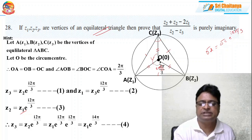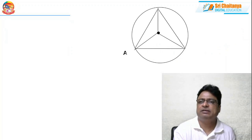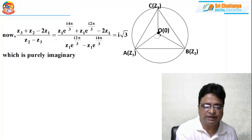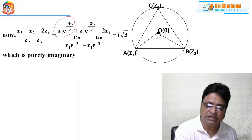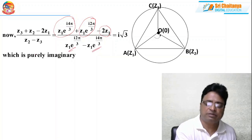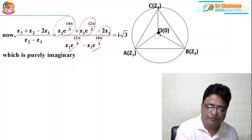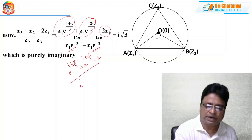You substitute Z3, Z2, and Z1 in the given rational function. In place of Z3 I have written the combination in terms of Z1, and similarly in place of Z2. Z1 will appear as a common factor and will cancel out. In the numerator you will get e^(i·4pi/3) plus e^(i·2pi/3) minus 2, and in the denominator e^(i·2pi/3) minus e^(i·4pi/3).